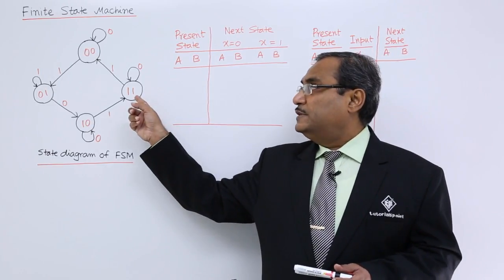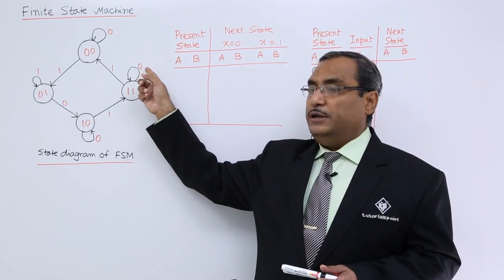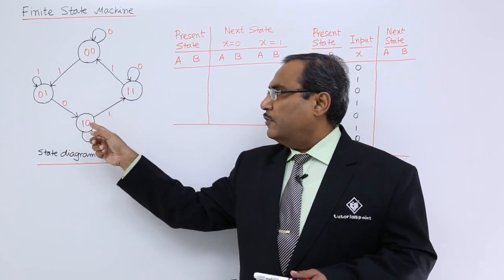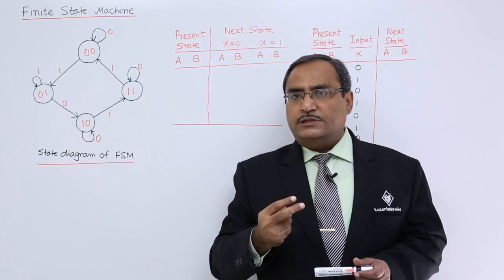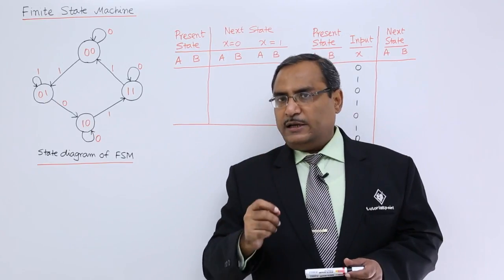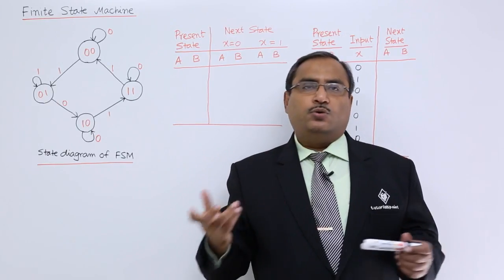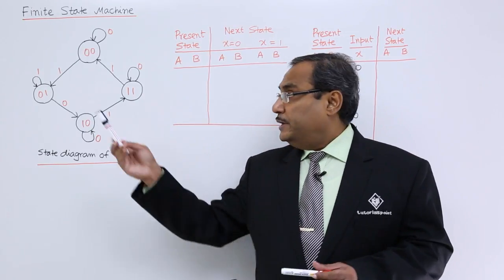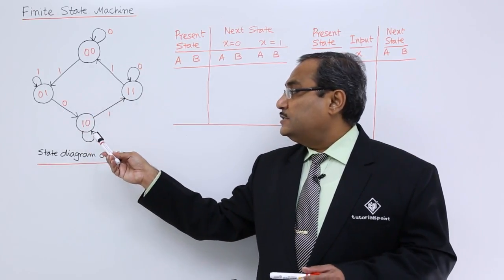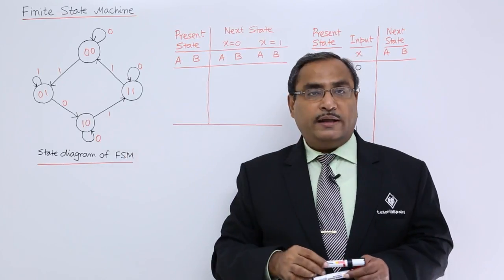For each and every state we are having transition for input 0 and input 1. In this way for all the states we are having two state transitions with 0 and 1 respectively for each state. It is having finite number of state transitions. Here you can find that this is the state diagram of one FSM.